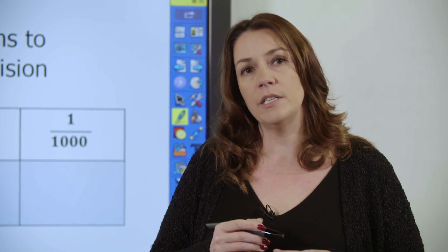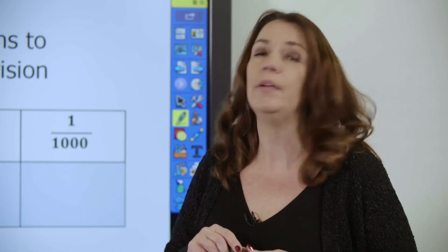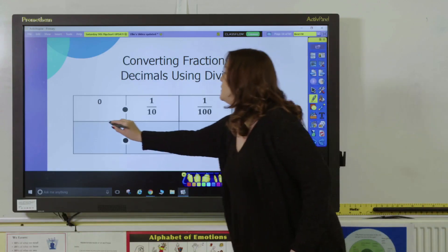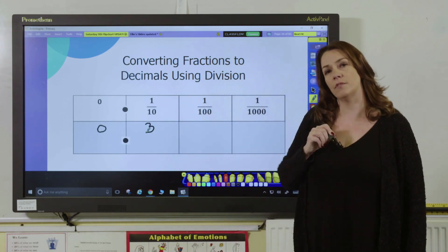If we take the fraction 3/10, for example, we need to divide 3 by 10. Pupils will have their knowledge of place value, knowing that the answer would be 0.3, as the 3 goes in the tenths column.